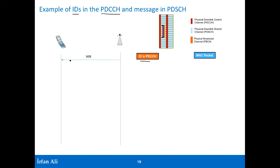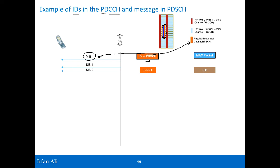When the mobile comes in and sits in range of the base station, the very first thing it will decode — after it has synchronized to the cell by looking at the primary synchronization and the secondary synchronization signal — is the MIB. The MIB is sent independently in the physical downlink broadcast channel, so it has a separate channel and you don't need to look at the common control channel or the SCH for it.